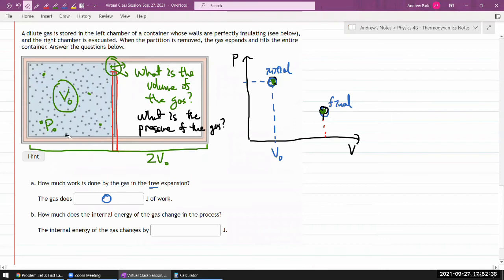An alternate description where there would be work done is if this partition, instead of being just removed, is being pushed out. Then there would be work being done - gas would be pushing against the partition. And in that scenario, you can also think about the process happening quasi-statically. But in this setup, if the partition is just being removed sideways suddenly, then no work is being done. As the gas expands, it's not colliding against something to push it out, so no work is being done.